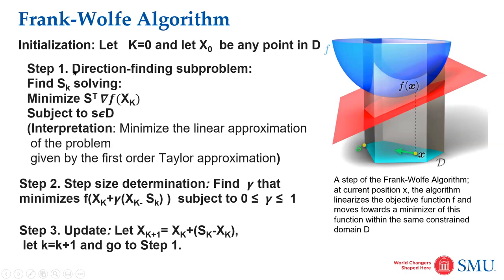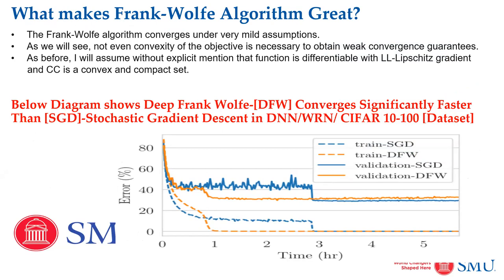Let me explain why the Frank-Wolfe algorithm is great. Some key points are that it works with very mild assumptions — convexity, continuity, and differentiability. Even without fully meeting those mild assumptions, we can still achieve convergence. It should be differentiable and satisfy Lipschitz gradient, but without that also we can sometimes still get results — that's why they are called mild assumptions.